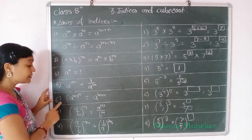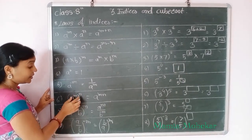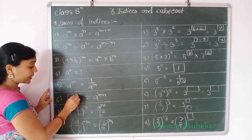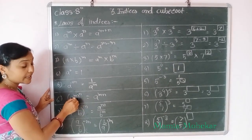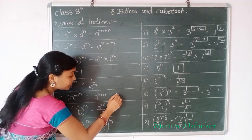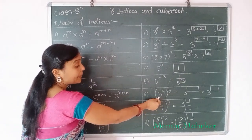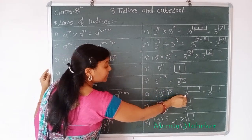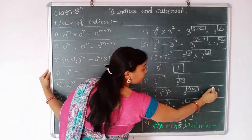Next rule is: A raised to power M, bracket to the power N. Here A has two powers M and N — first the inner bracket power M, then the outer bracket power N. That means the multiplication of indices: A raised to power M into N. Example: 3 raised to power 4, bracket to the power 5, equals 3 raised to power 4 into 5, which is 3 raised to power 20.